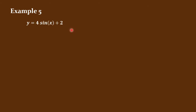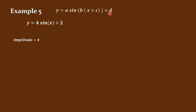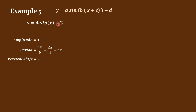For y = 4 sine x + 2: amplitude is the absolute value of 4, which is 4. Period is 2 pi over 1 = 2 pi. The vertical shift would be positive 2. We need to understand how to sketch the graph with a vertical shift.